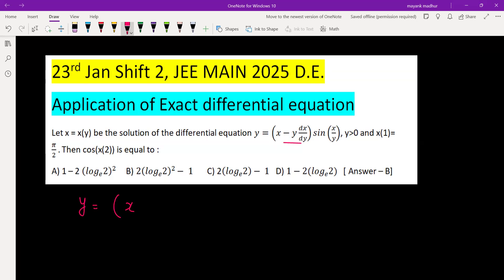When you take LCM over here, it will be x dy minus y dx divided by dy. You can do the cross multiplication, so we'll have y dy over here multiplied by sine(x/y).